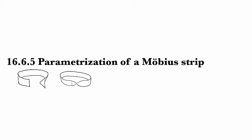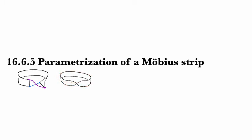I thought it would be fun to work out the parametrization of a Möbius strip. If you haven't seen one of these before, it goes like this. You take a strip of paper, and instead of attaching corner to corner to make a cylinder, you do something else. You take this corner and attach it down here and this corner up here, tape it together, and you end up with a piece of paper with a half twist. This is a Möbius strip, and it's got some interesting properties. It'll be a useful example going forwards.